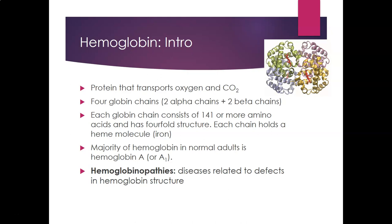Hemoglobin has a quaternary structure. Each alpha and each beta globin chain holds a heme molecule, so since there are four chains, there are four heme molecules in hemoglobin. This means hemoglobin can transport four molecules of oxygen per molecule. The majority of hemoglobin in normal adults is hemoglobin A, also known as hemoglobin A1.